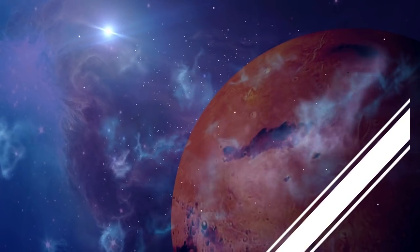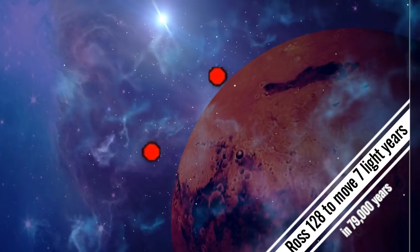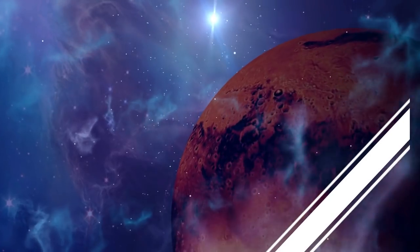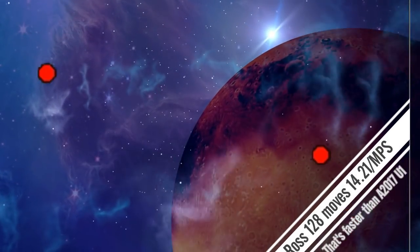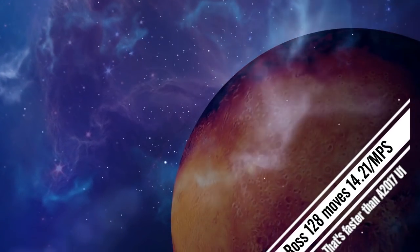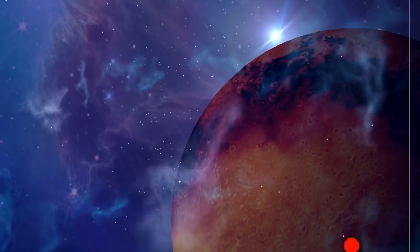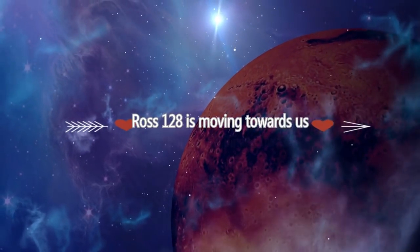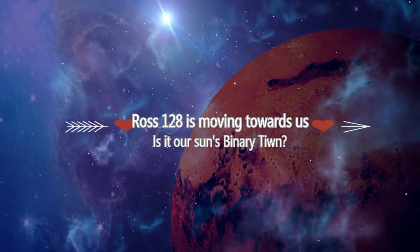Our current closest neighbor, Proxima Centauri, is 4.2 light-years away. This means Ross 128 needs to move 7 light-years in 79,000 years to claim the closest spot. 7 light-years means 41,160,000,000,000 miles. Divide that by 79,000, you will get 521,000,000 miles per year, or 1,427,000 miles per day, which is 59,476 miles per hour and 991 miles per minute. Basically, these two stars are moving towards each other at 16.5 miles per second.